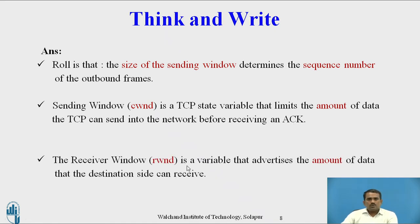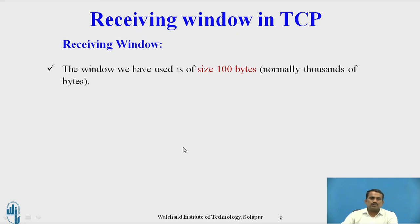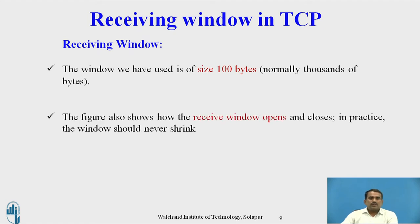In the Receive window, it is also a variable that advertises the amount of data that the destination side can receive. The Receive window uses the same size as the Send window — 100 bytes in this example, though normally thousands of bytes. The figure also shows how the receiver window opens and closes. In practice, the window should never shrink on the receiver side.